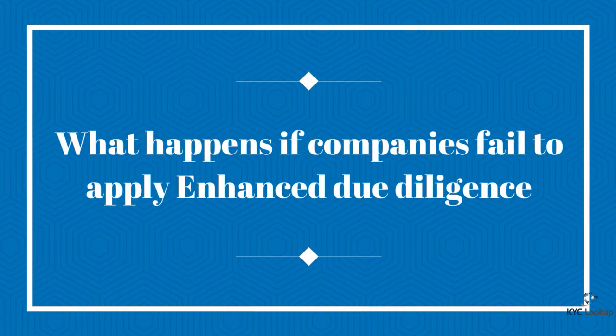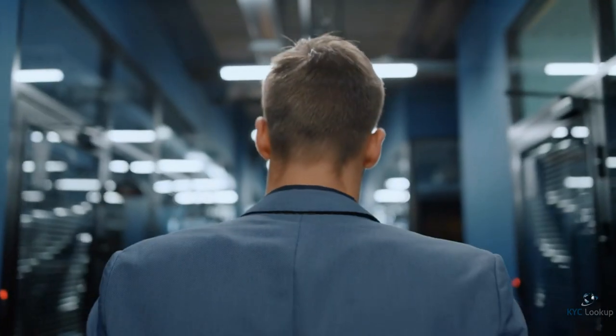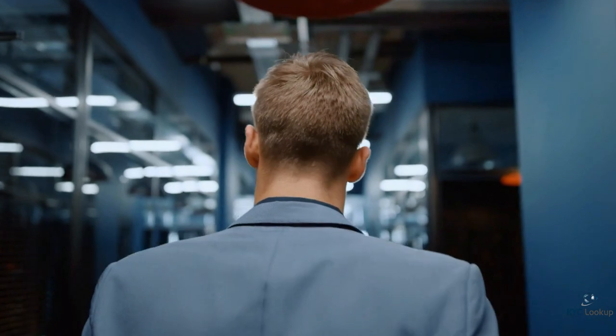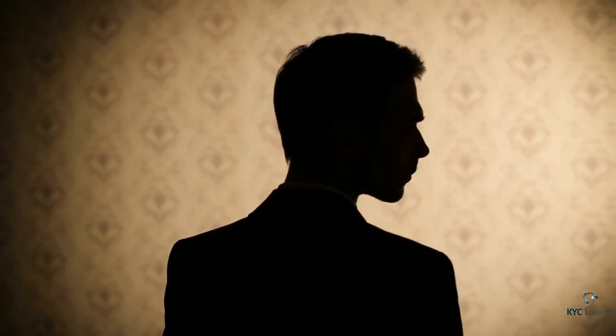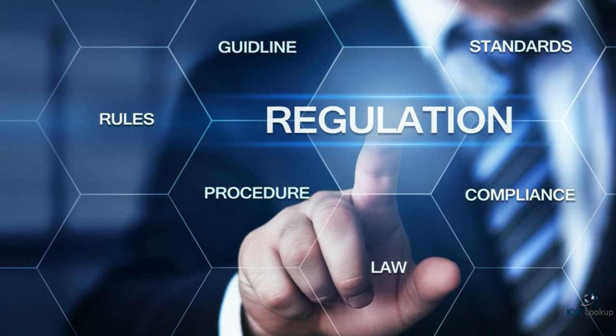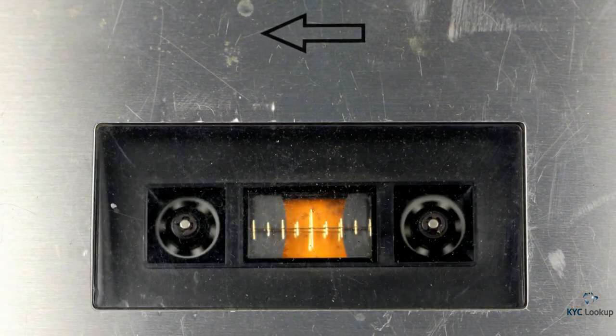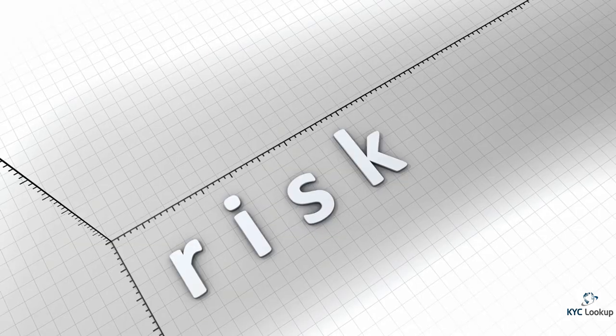What happens if companies fail to apply Enhanced Due Diligence? Once you've identified that a customer is a risk to your company, failing to carry out Enhanced Due Diligence can make your business more vulnerable to financial crimes like money laundering. Simply put, you risk the financial integrity and reputation of your company by avoiding performing the right level of due diligence. On top of this, if your business is audited to check that it's AML compliant and you haven't subjected your high-risk customers to Enhanced Due Diligence, you could face serious penalties due to being in breach of local AML regulatory requirements.